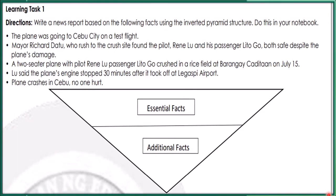For learning task one, write a news report based on the following facts using the inverted pyramid structure. Do this in your notebook. The first part is the essential facts, and then the additional facts.